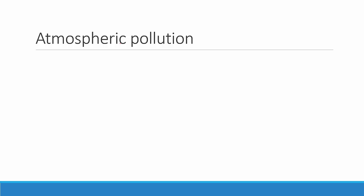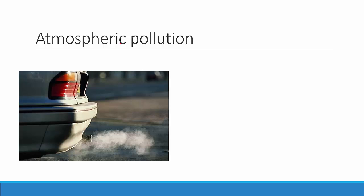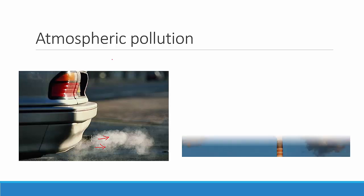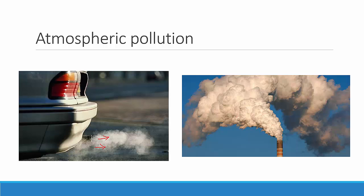Now let's see the next part of the chapter: atmospheric pollution. The air that surrounds us contains particles of dust and smoke and also very harmful gases. These dust, smoke, and harmful gases make the air very dirty or polluted. Atmospheric pollution is caused mainly because of smoke and poisonous gases from factories and vehicles. When fossil fuels such as coal or oil are burnt in factories, or when petrol is burnt in vehicles, this kind of smoke is given out that is polluting our atmosphere.